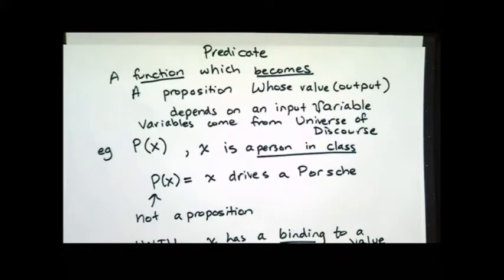All right, so a predicate. We mentioned before that we can't, a statement that actually depends on some other values can't be a proposition. We can turn it into a proposition if we notate it like a predicate and if we give a value to an input variable. So a predicate is a function that becomes a proposition whose output depends on an input variable.